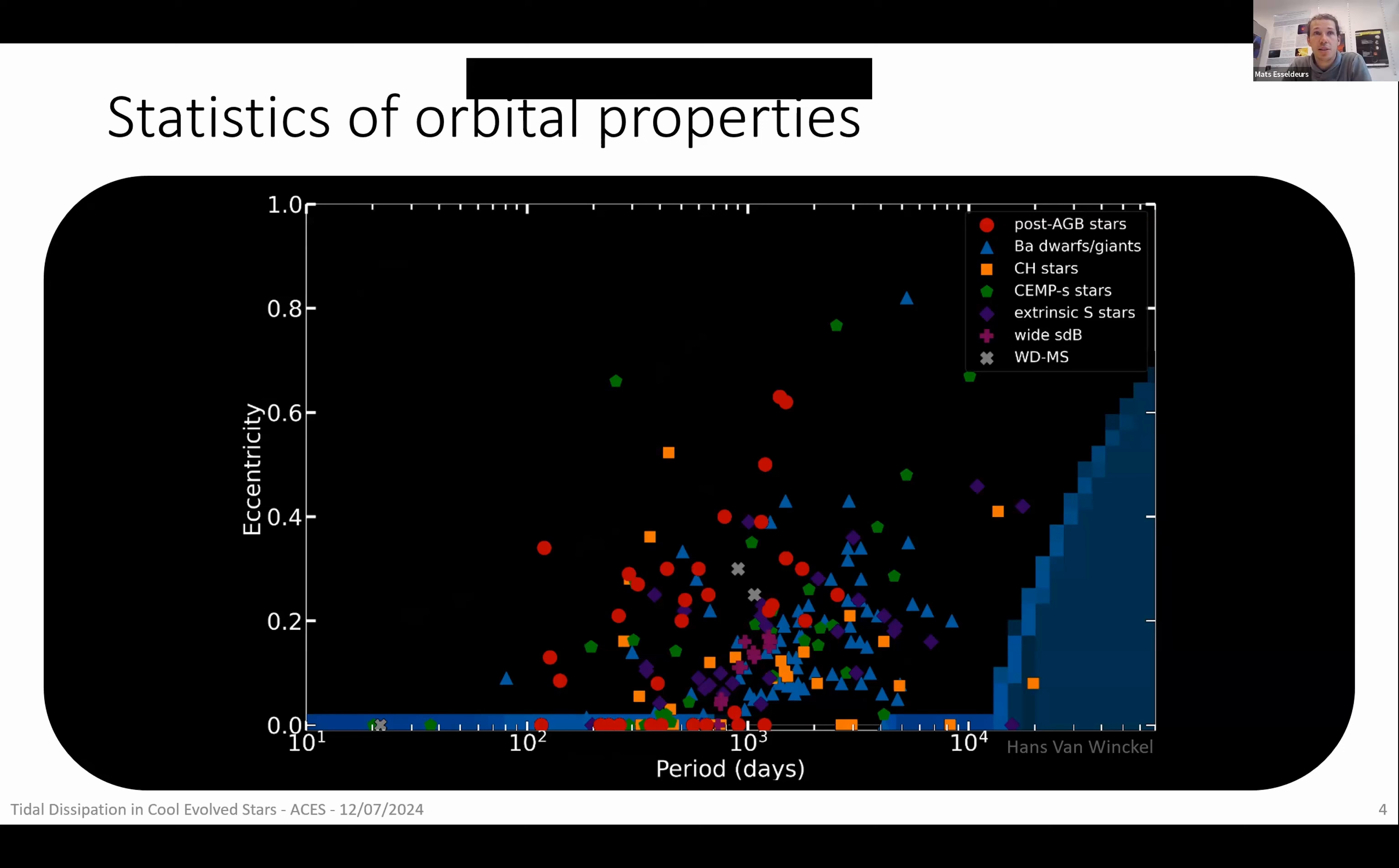And this is exactly what can be seen in this period eccentricity diagram here. That's already been well explained by Kasper in an earlier talk as well. But let me reiterate, you have binary properties, periods and eccentricities of such systems by the points in the diagram. And in the background you have population synthesis calculations where we predict there is a bimodal distribution in terms of the orbital periods.